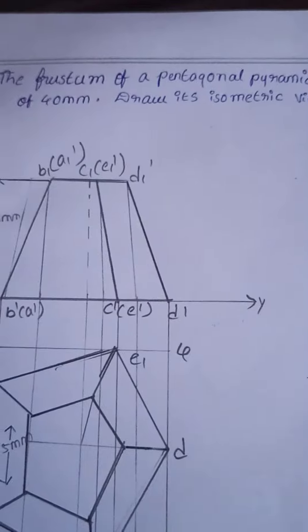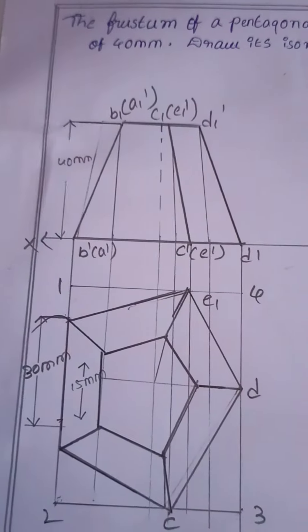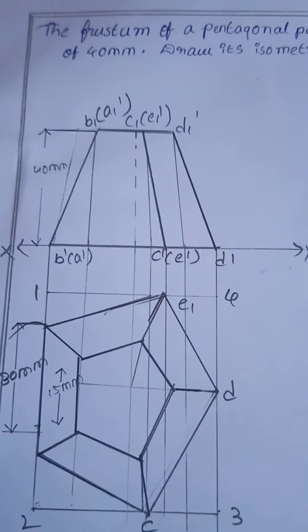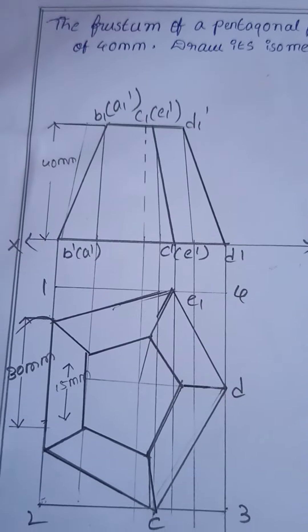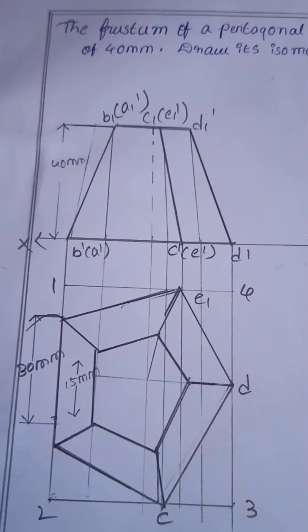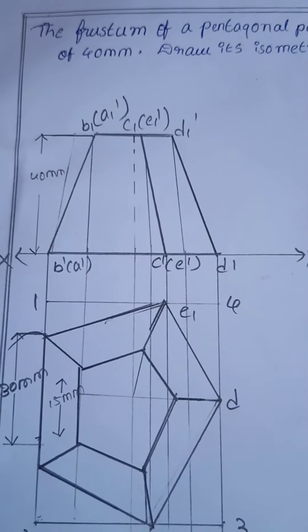First, we have to draw the top view of the frustum which consists of two concentric pentagons and close the bottom face A, B, C, D, E in a box 1, 2, 3, 4.